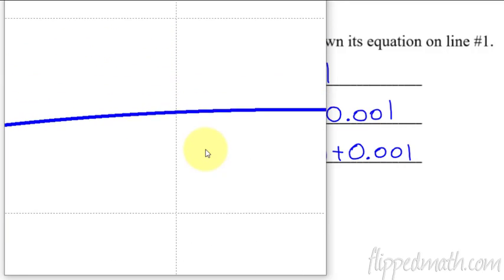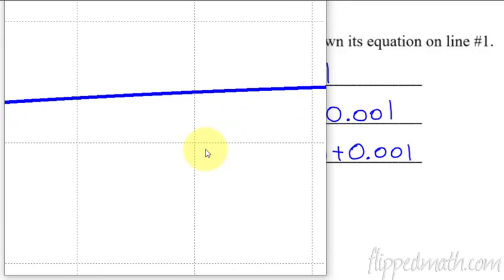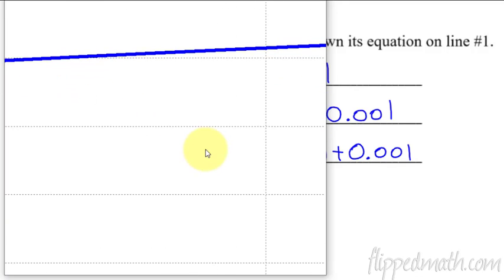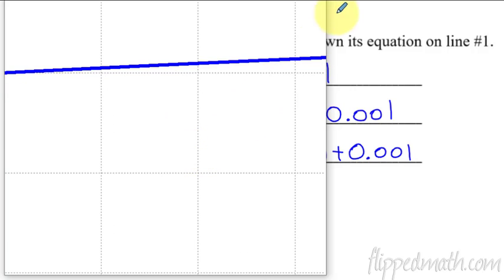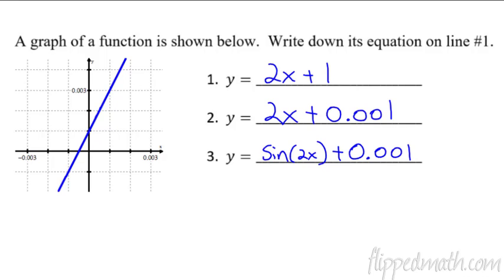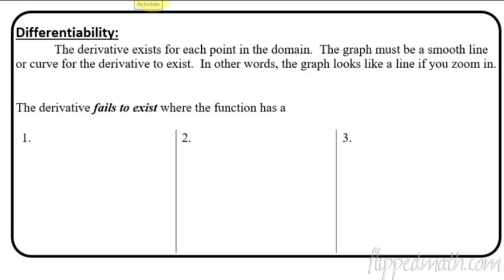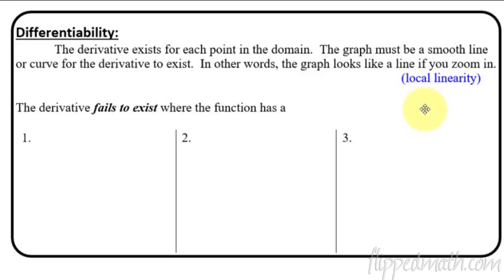The whole point of showing you that is to demonstrate that even if a graph has curves to it, if you zoom in close — say, to that maximum point — the closer you get, the more it looks like a line. Even though we're very close to a maximum, you get close enough and it looks just like a flat line. That is very closely related to differentiability. The derivative exists for a function means the graph looks like a line if you zoom in — that's called local linearity.